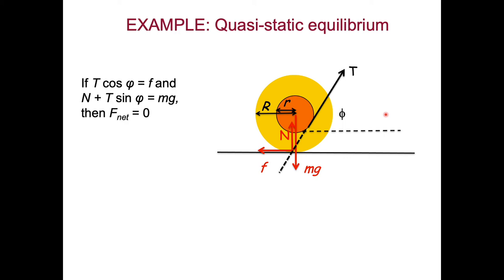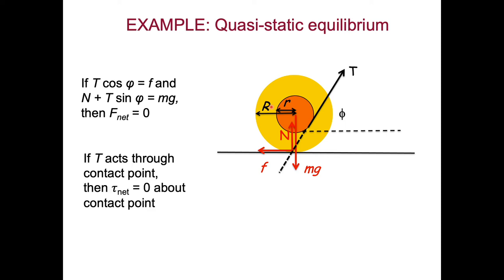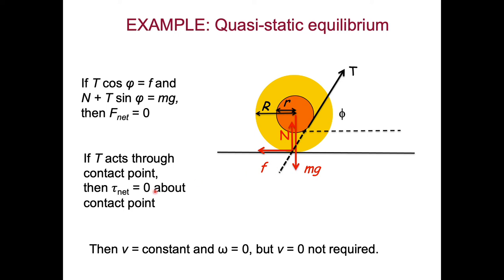If T cos(φ) equals the frictional force, and N plus T sin(φ) equals Mg, then all linear forces balance — the x component of tension balances friction, and Mg, the y component of T, and N cancel out. This means no net force on the yo-yo, so it is either stationary or moving at constant velocity. The interesting case is when the tension pulls along a line pointing directly to the contact point: there is no torque about that contact point, so omega equals zero, while V is at least constant since there's no net force.